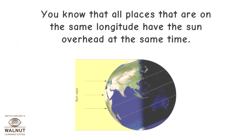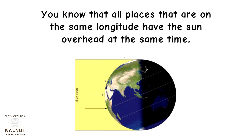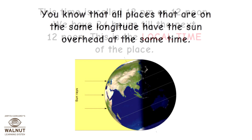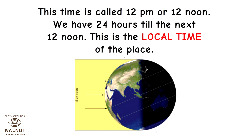Standard Time. All places on the same longitude have the sun overhead at the same time. This time is called 12pm or 12 noon, and we have 24 hours till the next 12 noon. This is the local time of the place.